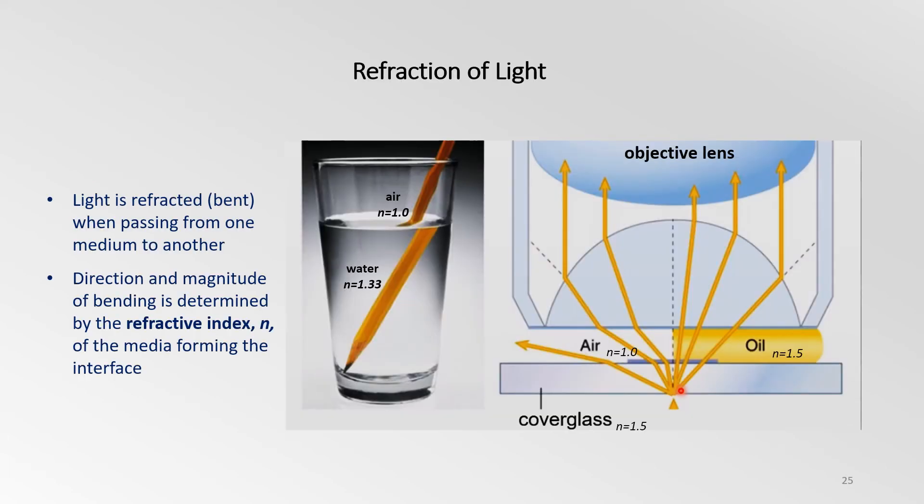Different transparent materials can transmit light at different speeds. Thus light can change speed when passing from one material to another. This change in speed usually also causes a change in the direction of light. This is called refraction.